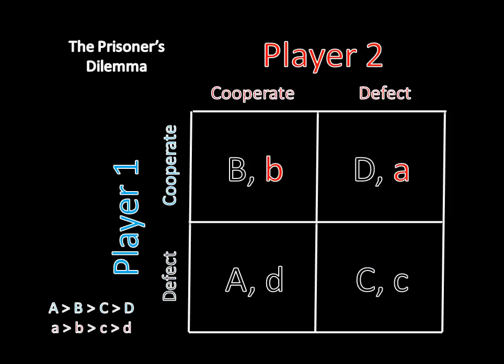Now we can do the same thing for player 2. If player 1 cooperates, player 2 will want to defect, because A is better than B. And if player 1 defects, player 2 is still going to want to defect, as C is better than D. And just like that, we've shown that for all forms of this game, the only sensible equilibrium is going to be mutual defection.